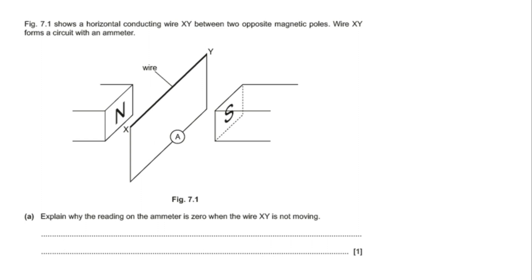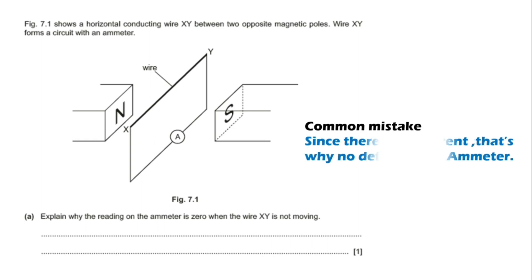The figure shows a horizontal conducting wire XY between two opposite magnetic poles. Wire XY forms a circuit with an ammeter. The question is: explain why the reading on the ammeter is zero when the wire XY is not moving. A very common mistake made by students is to write: since there is no current, that's why there is no deflection in the ammeter.